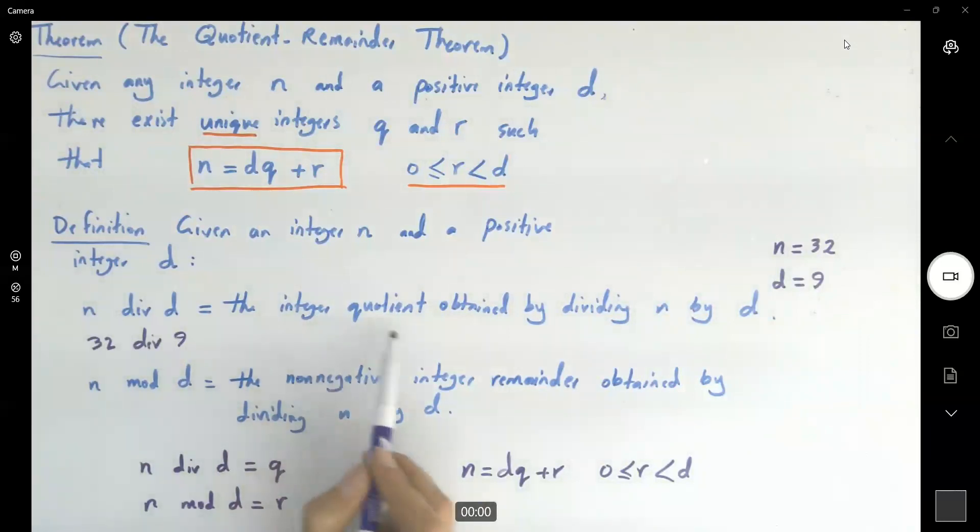or when you're looking for the integer quotient, after doing the division between these two, you have 3. And for the mod, you have 32 mod 9, the remainder is 5.